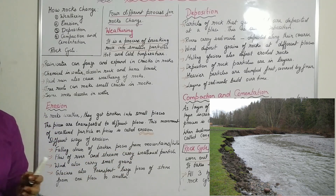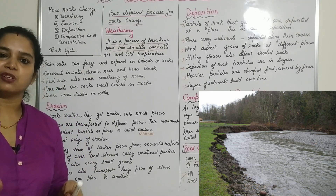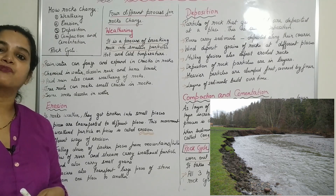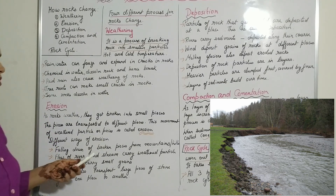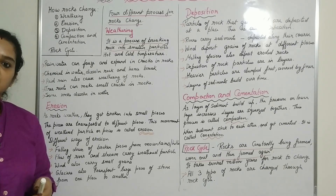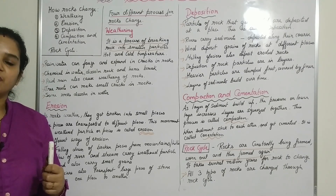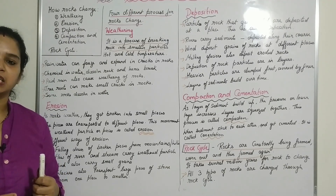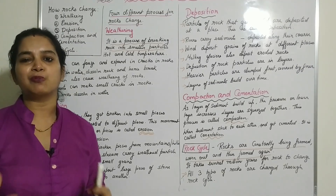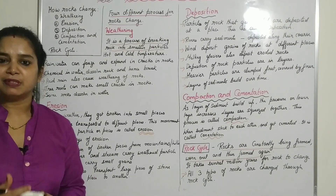Falling of broken pieces from mountains — such as landslides — causes big boulders to fall from mountain or hill slopes, and they get eroded and deposited in different places. Rivers and streams carry weathered particles; as the rocks are carried along by high water currents, they collide with one another and break into smaller particles.